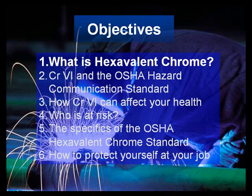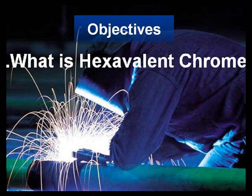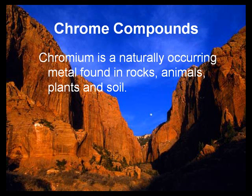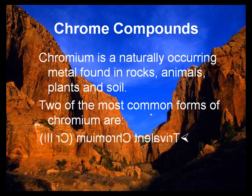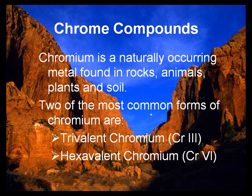First, let's take a look at what hexavalent chromium is and where it is found. Chromium is a naturally occurring metal found in rocks, animals, plants, and soil. Two of the most common forms of chromium are trivalent chromium or Chrome-3, and hexavalent chromium or Chrome-6.